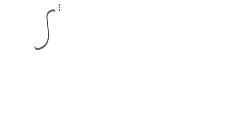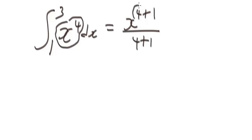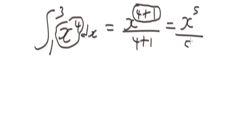Let's begin with this example. We are given this definite integral function: the upper limit is 3, the lower limit is 1, and we have x to the power of four dx. So how do you solve this problem? The first thing you have to do is find the indefinite integral of x to the power of four. We get x to the power of four plus one over four plus one, and when you simplify this, you get x to the power of five over five.